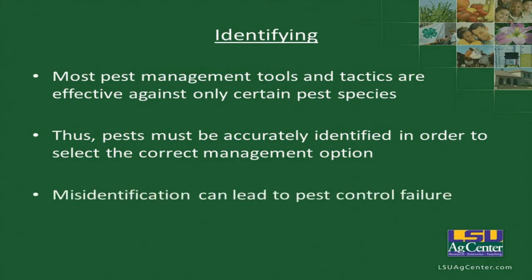Misidentification can lead to pest control failure. For instance, if I misidentify my soybean looper compared to my velvet bean caterpillar — here we're looking at the number of prolegs in the back — if we've misidentified and the product we want to use can only be used for VBC, such as a pyrethroid, and we put it on soybean loopers, we could actually flare our soybean loopers. Because the product's not going to kill the looper, it's going to kill off our natural enemies.